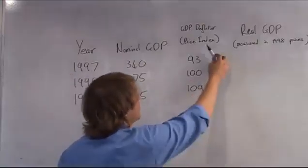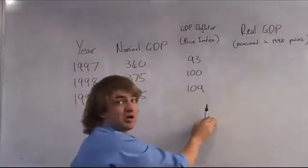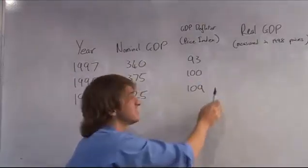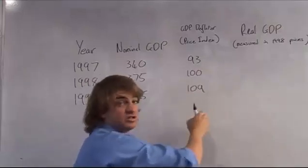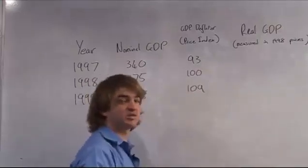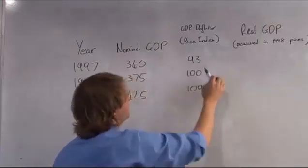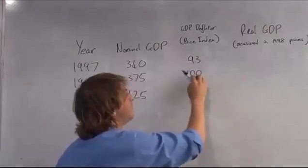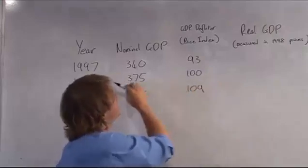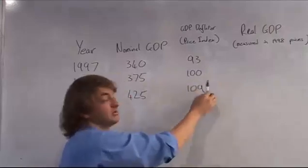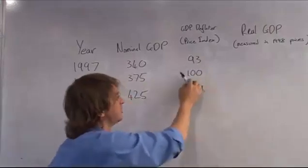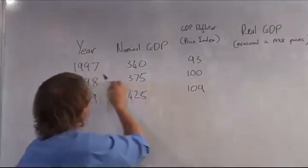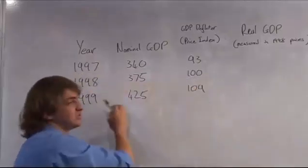You work out a separate price index according to a basket of goods. You work out the value of this basket of goods at every year, and you base it at one of the years being equal to 100. The year where it's equal to 100 is the base year.